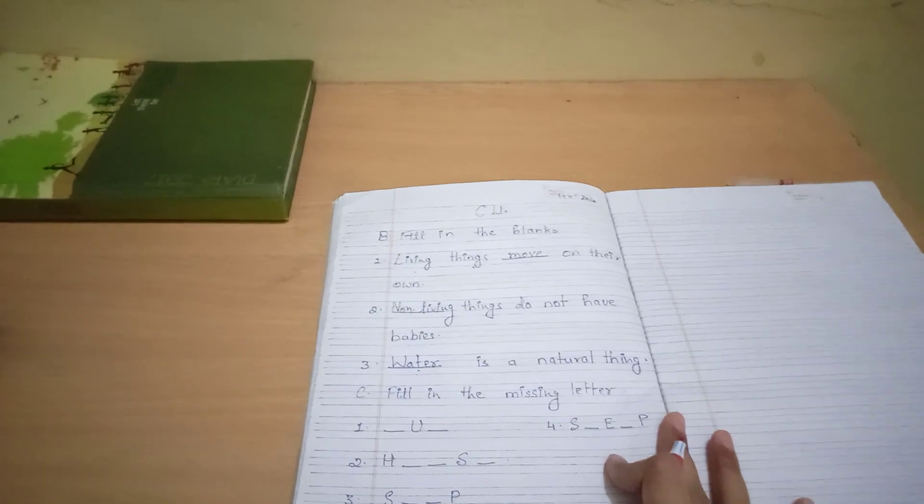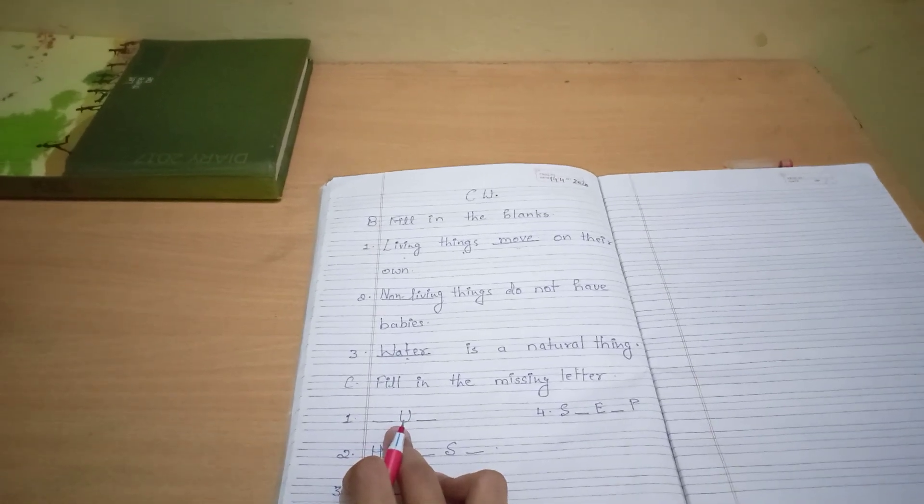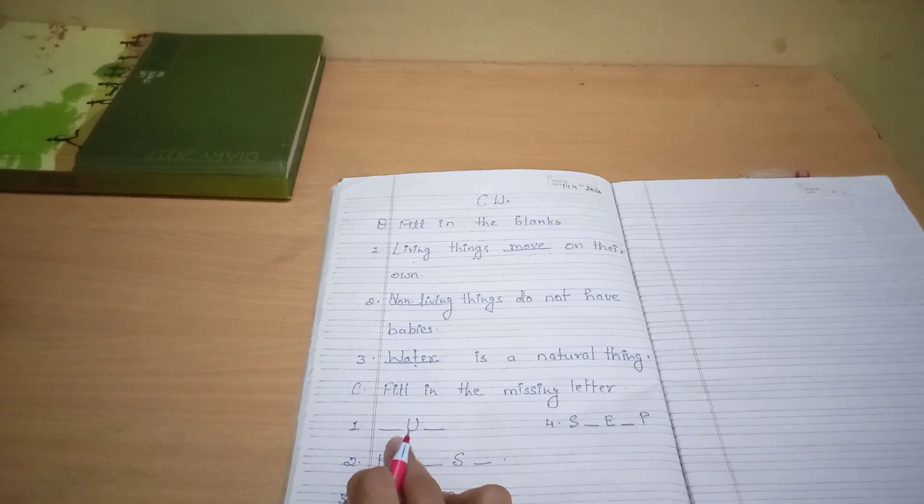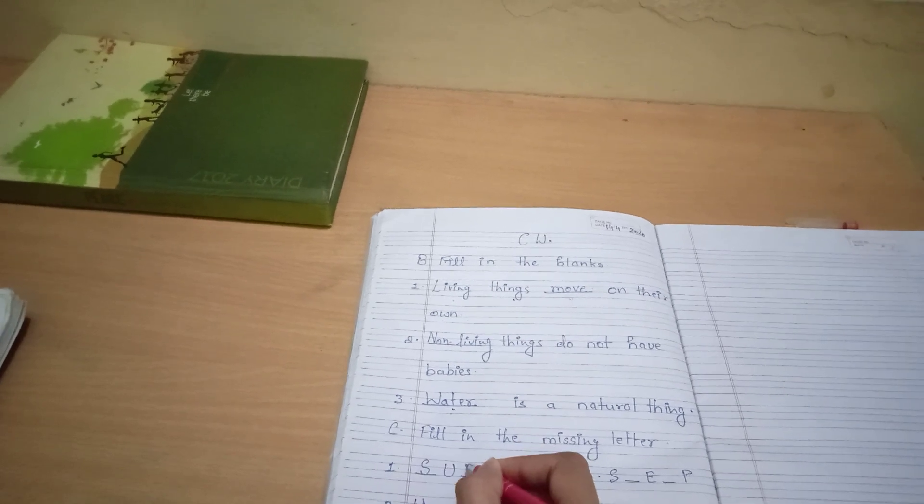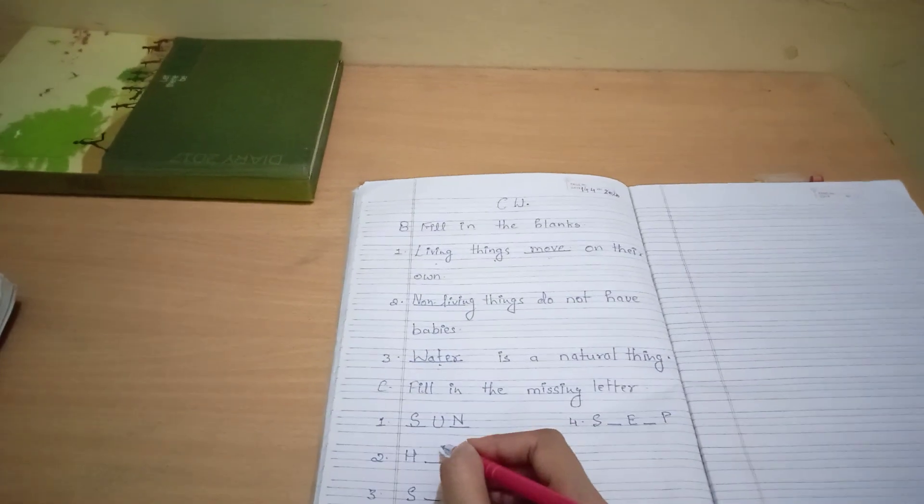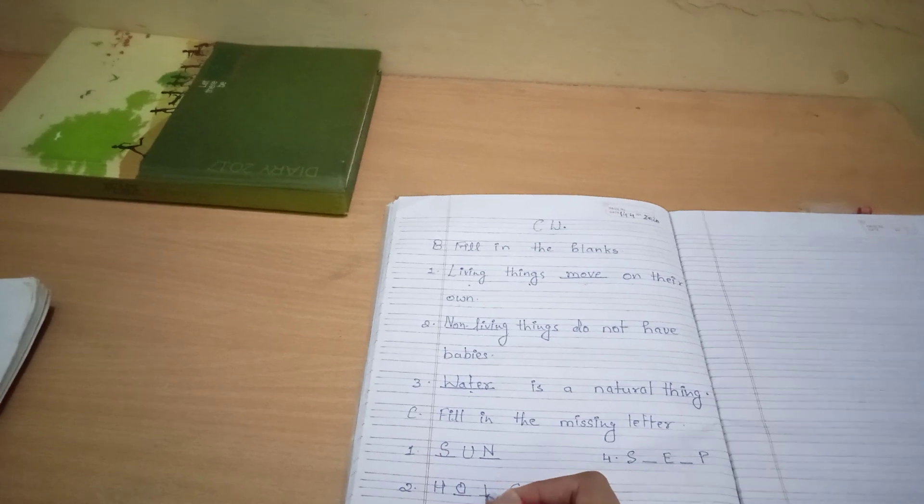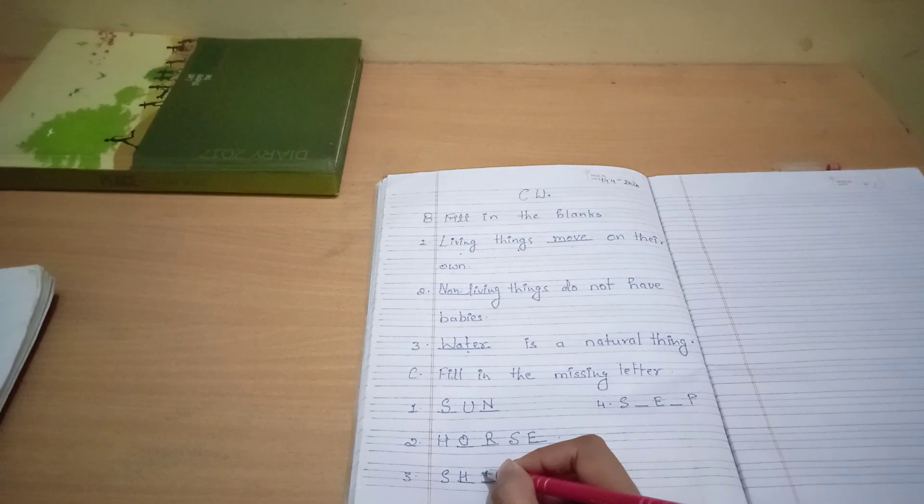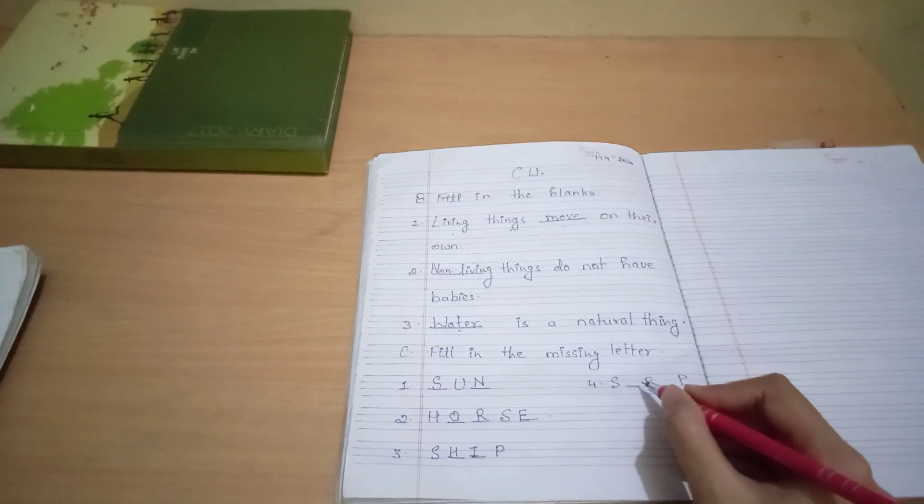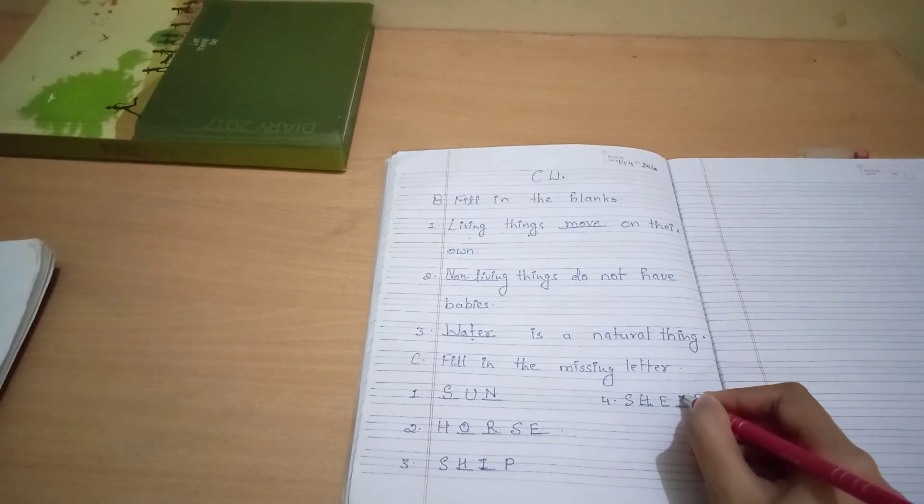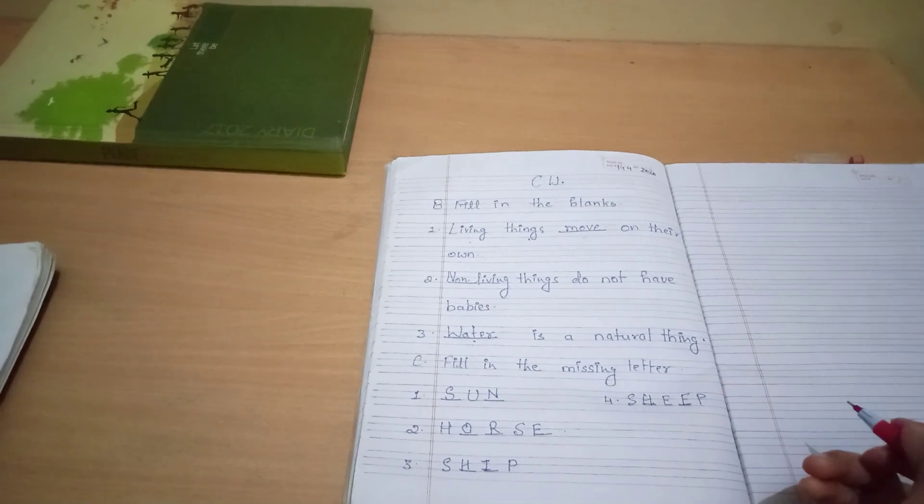So अब हम इसमें find out करेंगे. So number one क्या हो सकता है? यह तो उसमें से कोई living thing ही होगा, यह non-living thing, उसके अलाब हो कुछ नहीं हो. तो यह क्या हो जाएगा? Sun. S, U, N. Sun. Now this one is what? H है और S है? That means यह हो जाएगा horse. H, O, R, S, E. And this one is ship. S, H, I, P. Ship. So यह क्या है? Sheep. S, H, E है ही एक और एक E, P. Sheep.